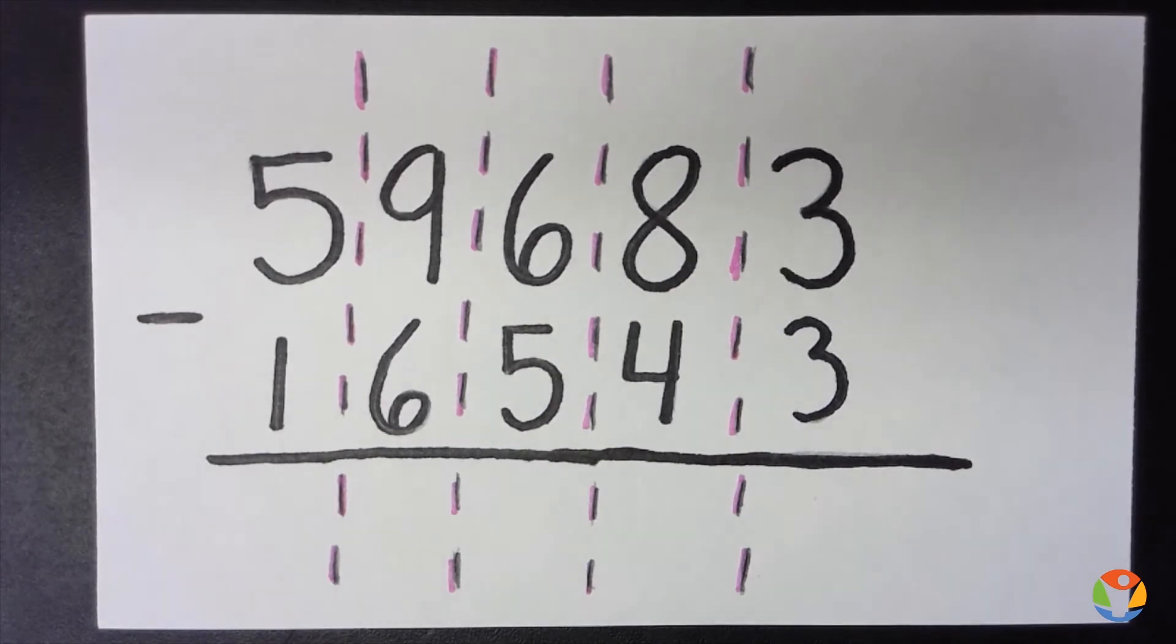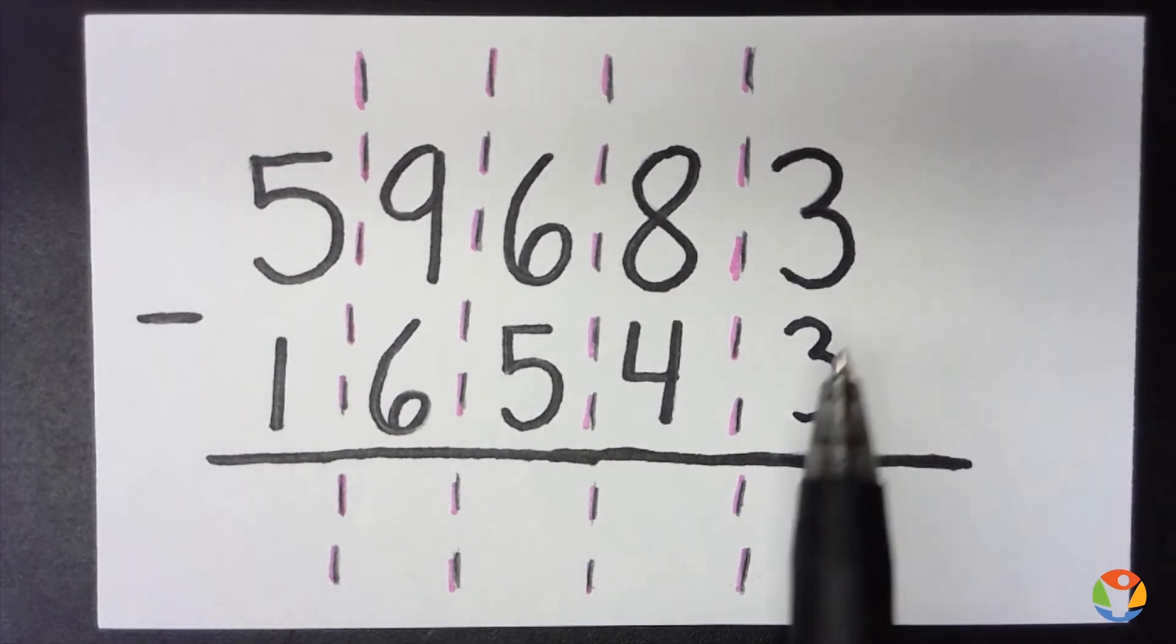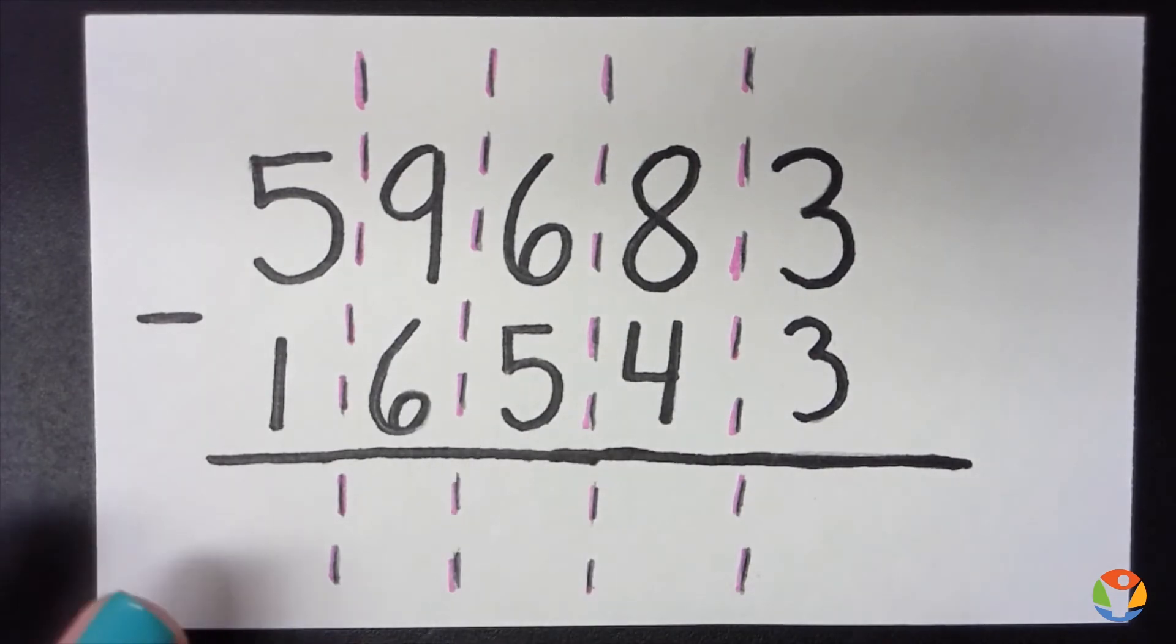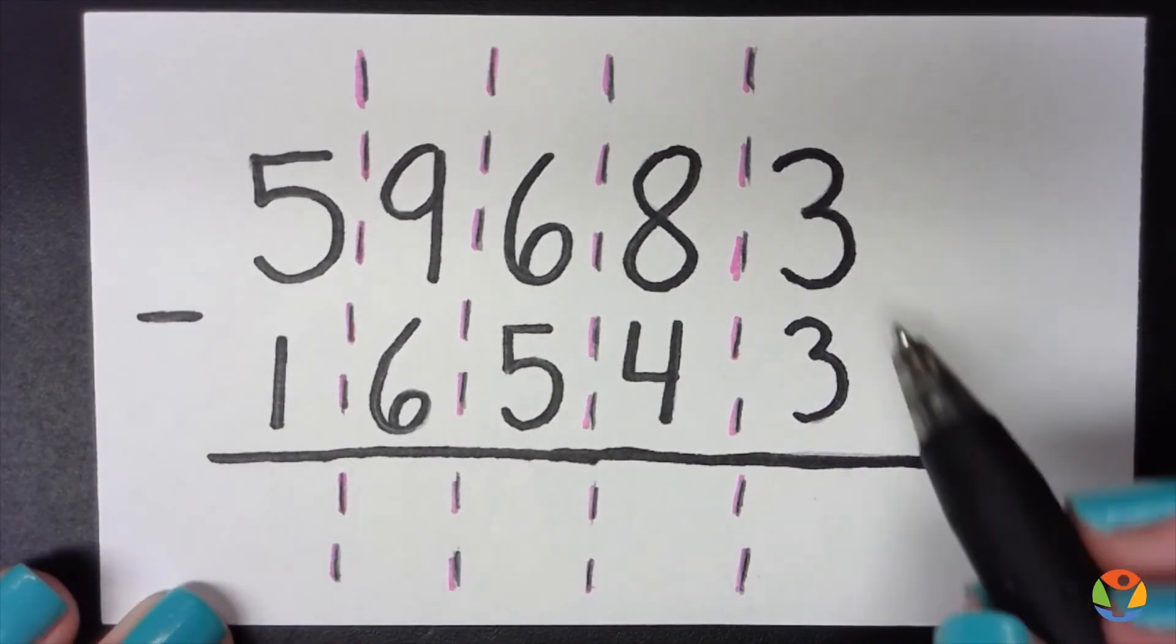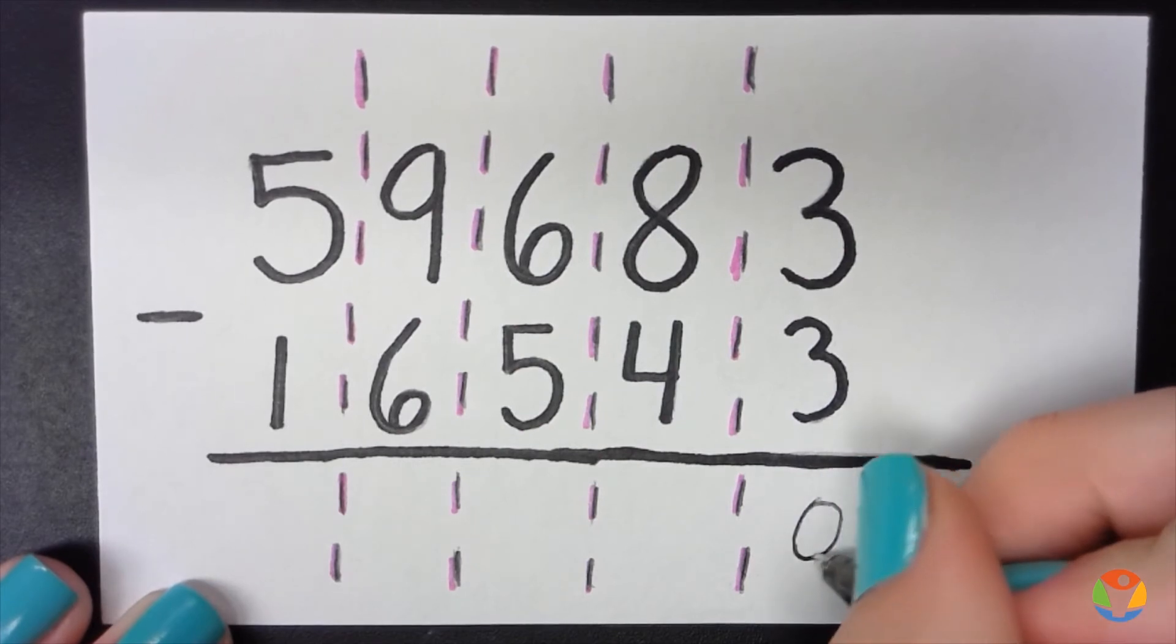And this is our last practice problem. More on top, no need to stop. Three minus three is zero, eight minus four is four, six minus five is one, nine minus six is three, five minus one is four. Good job!